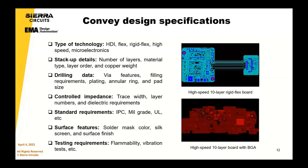Other important information includes surface finish type, materials, and what kind of requirements you need — whether it's IPC grade two, grade three, mil grade, mil spec, or UL requirements. All of these help us choose our material sets and processes to ensure the product we send you is fit for purpose.